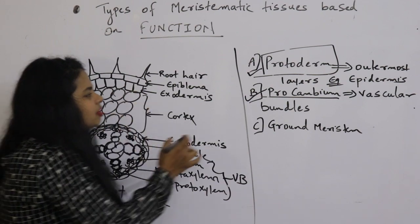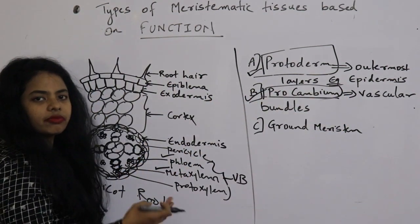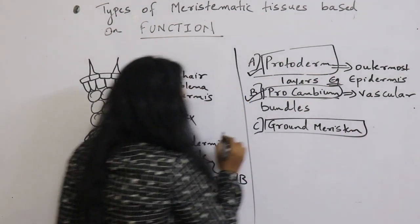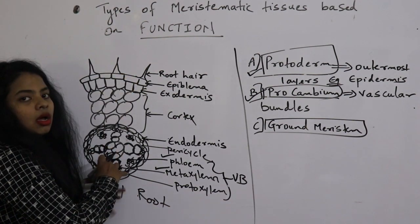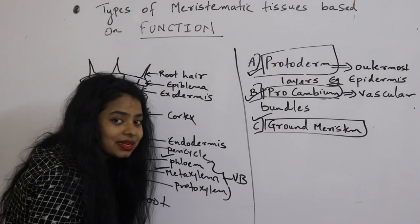So these are some primitive tissues which give rise to the major and most important parts of the plant. Now the next thing is ground meristem. Whatever is remaining, if we leave the outermost and innermost, whatever is remaining is made up of ground meristem.